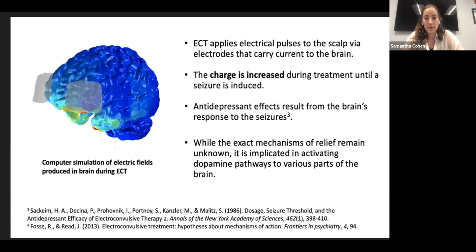ECT works by applying electrical pulses to the scalp via electrodes that carry current to the brain. The goal is for the current to induce a seizure in the brain, thus charges increase during treatment until a seizure threshold is reached. The brain's adaptation to the seizure is responsible for ECT's antidepressant effects. Although it is not fully understood how ECT improves depression, it is thought to promote the activation of dopamine response neurons.